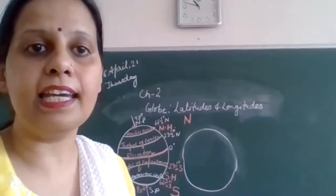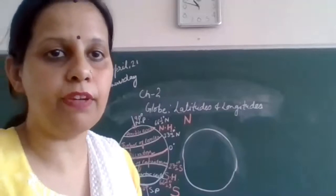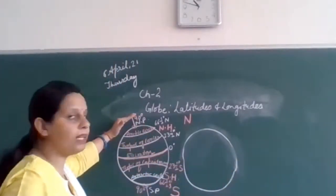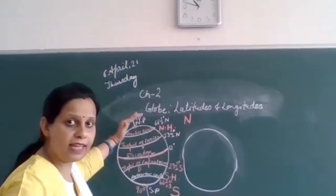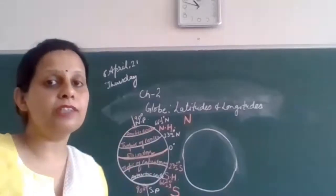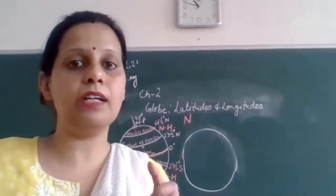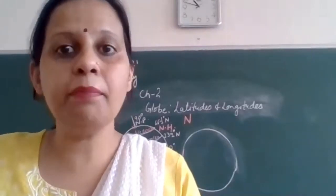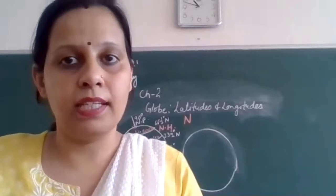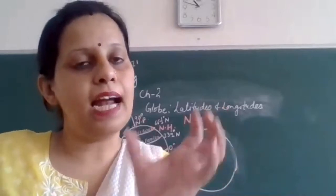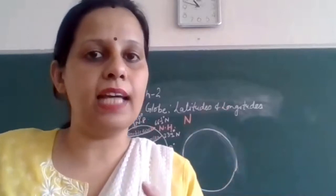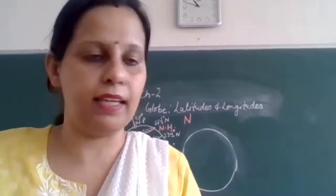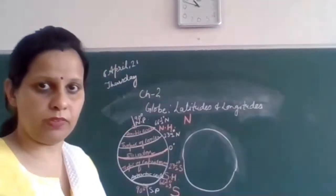Let's look at the length of these lines. As we move away from the equator towards the poles, the length and size of the latitudes start decreasing. Now there is another type of imaginary line we need to talk about — longitude.